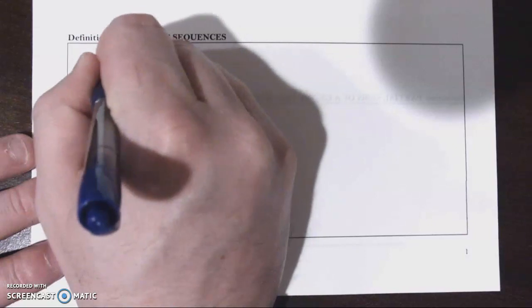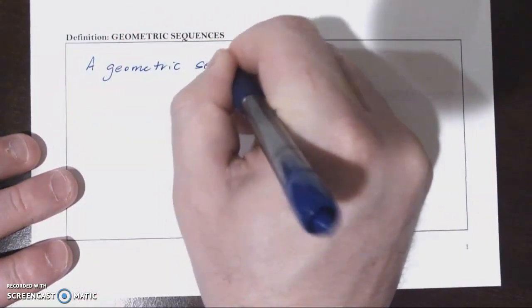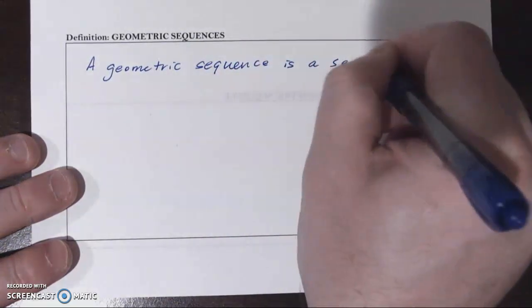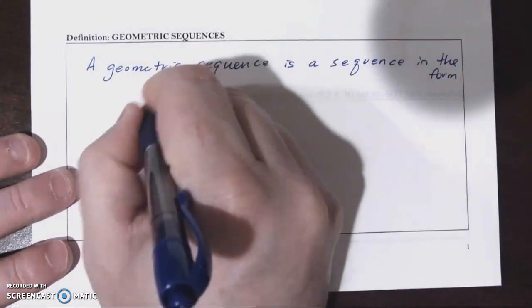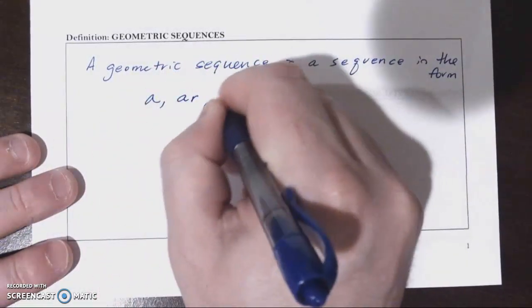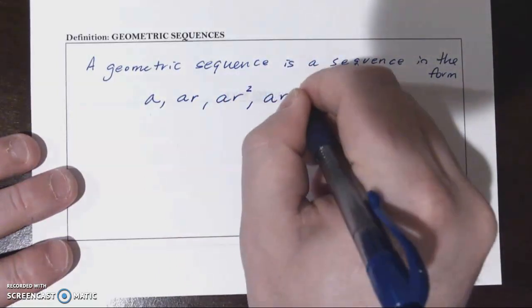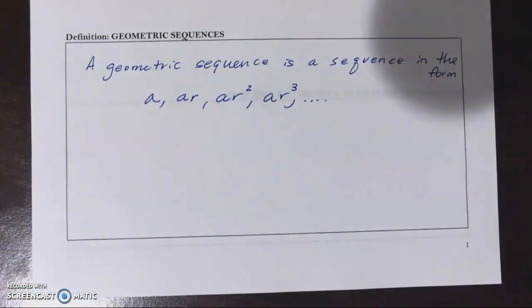A geometric sequence, let's give you the math definition here, is a sequence in the form A, A times R, A times R times R, A times R times R times R, or to the second or to the third power.